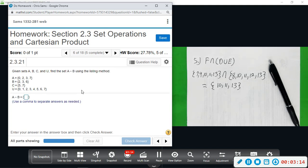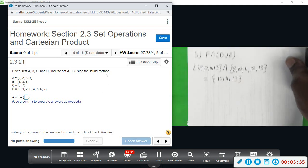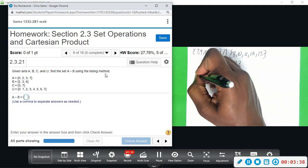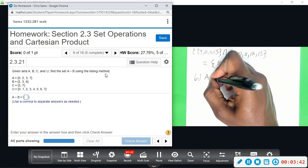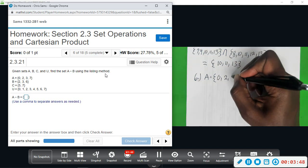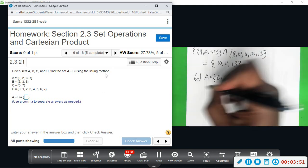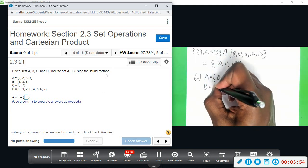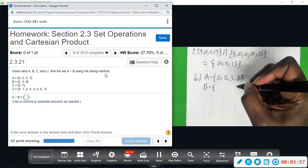All right, now we want to look at number six. And we have set A, B, C, and the universal set. We want to find the set A, take away the elements that are in set B, using the listing method. Okay, so I'm going to show you just a couple of ways. So I'm going to list A here first. So A is the set 0, 2, 3, 7, and B is the set 2, 3, 6.